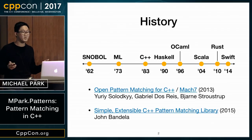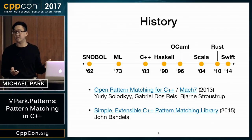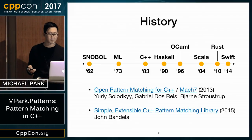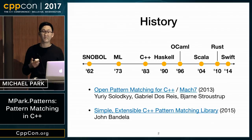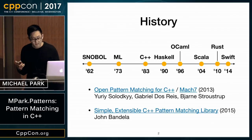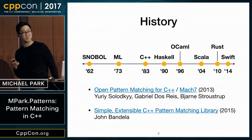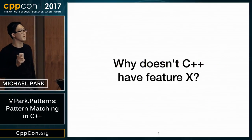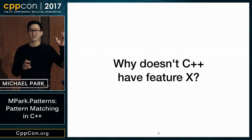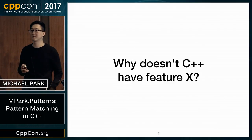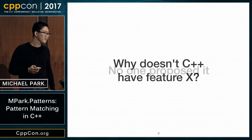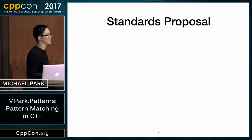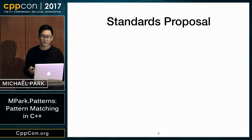So 35 years into C++, we still don't have the full extent of what pattern matching gives us at our disposal. The most common answer to 'why doesn't C++ have feature X' is: no one's proposed it. So we need a standards proposal to actually add it to the language.